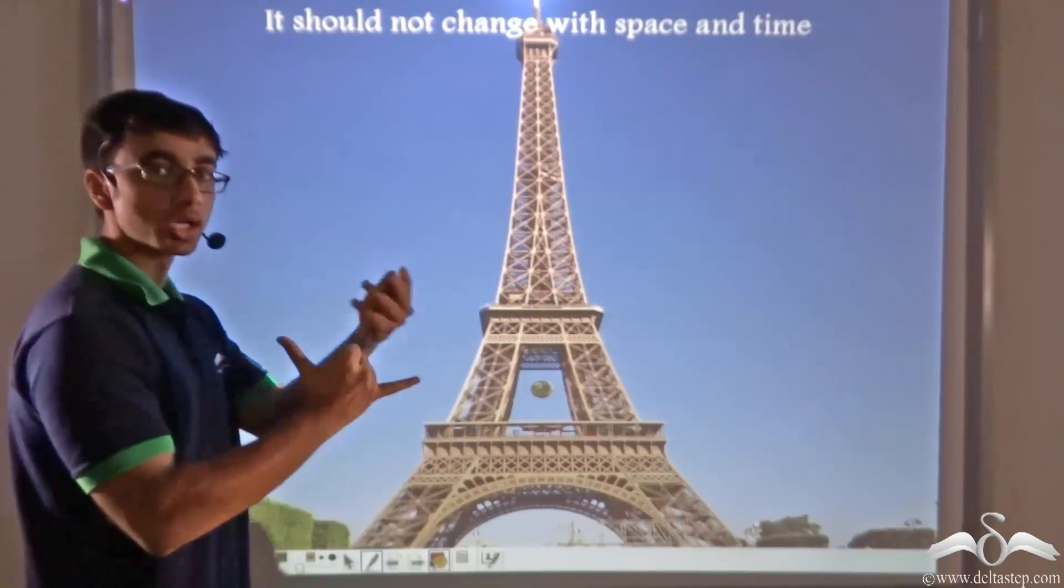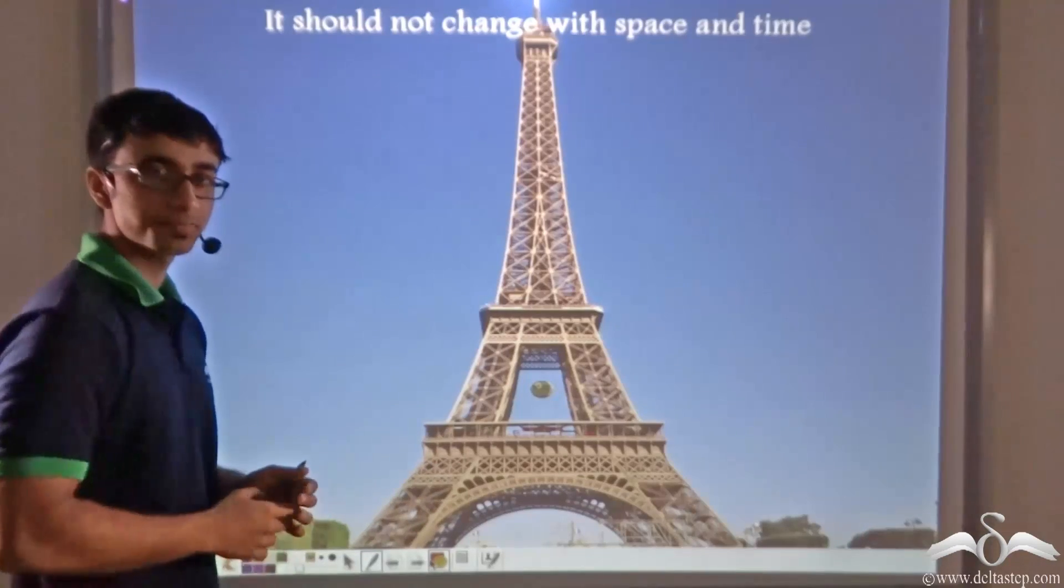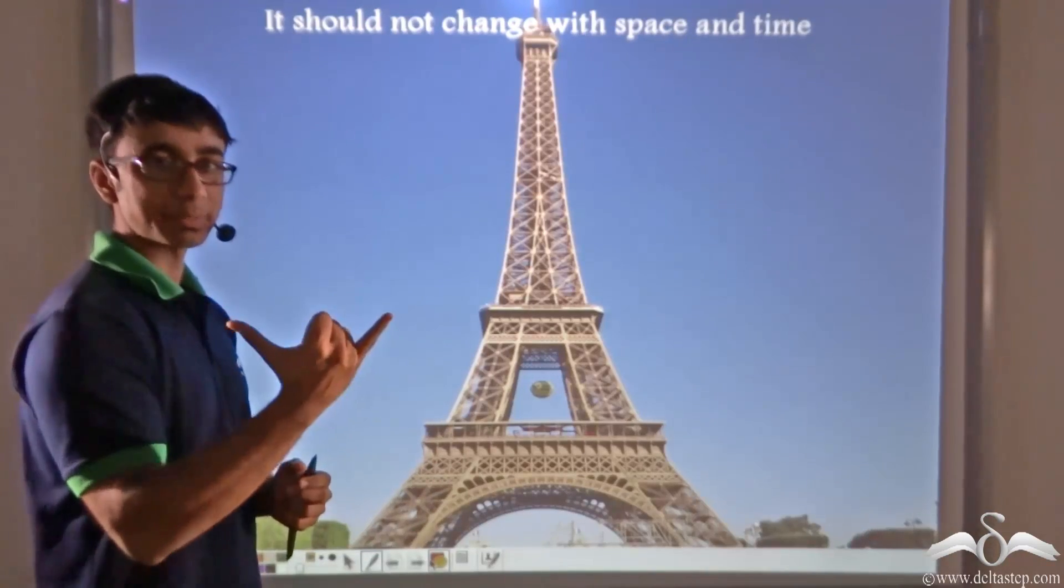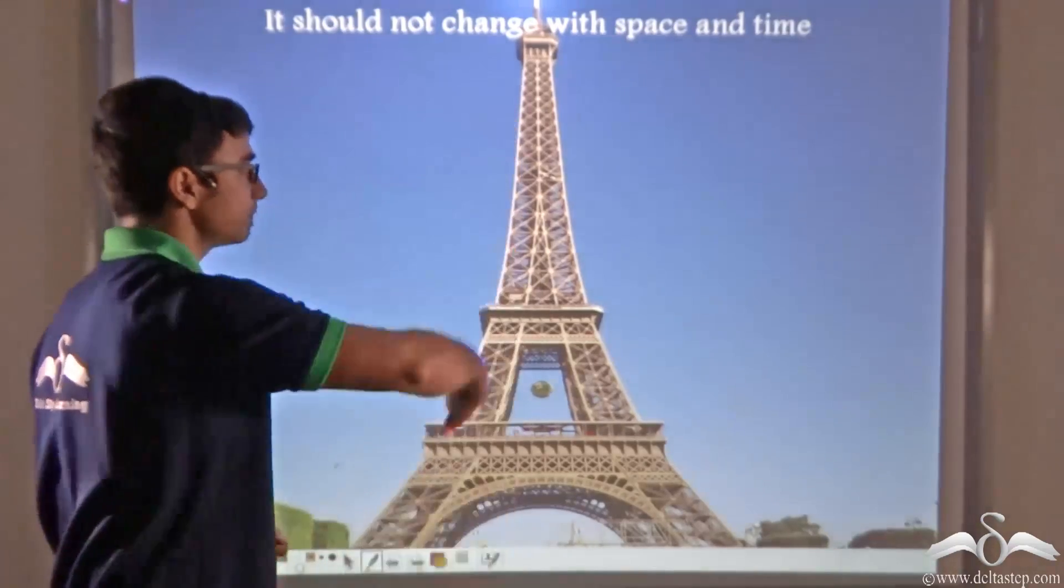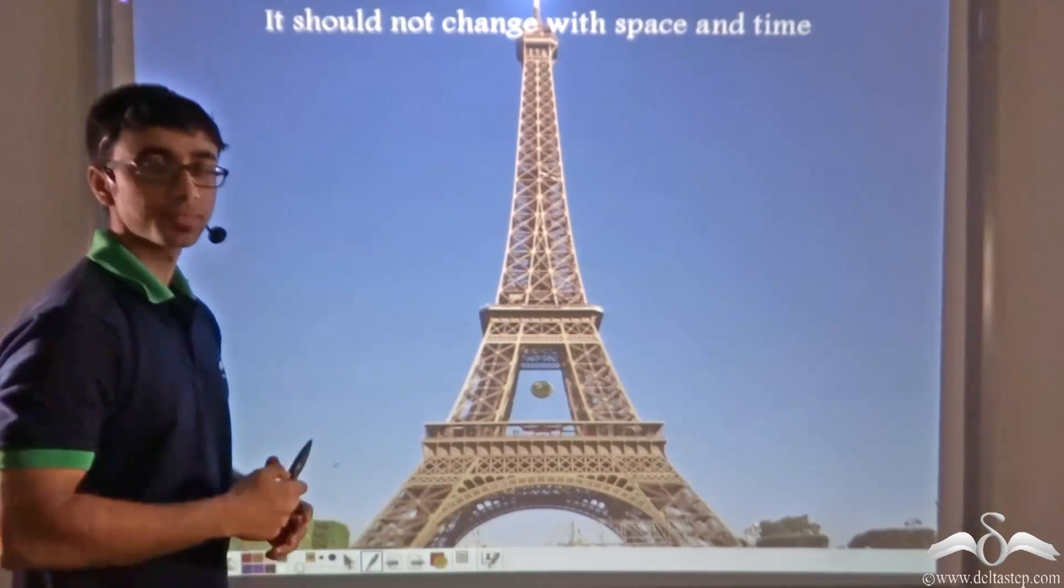So if he uses handspans as a unit of measurement, it won't be possible to measure the height of the Eiffel Tower. Why? Because the unit itself has changed.